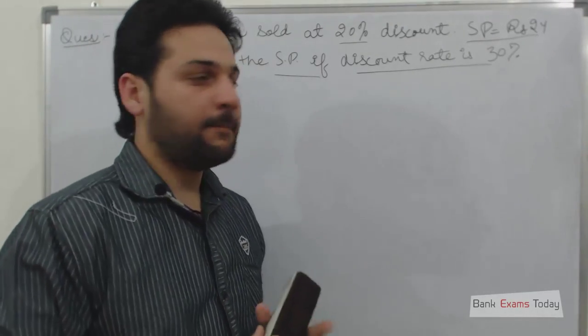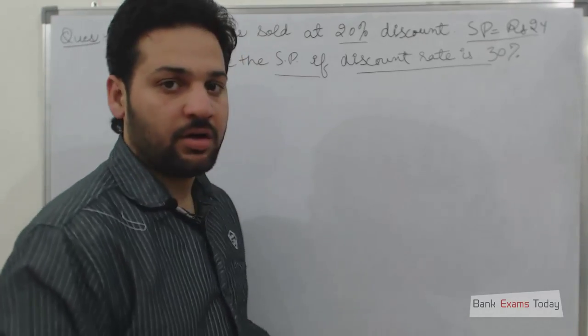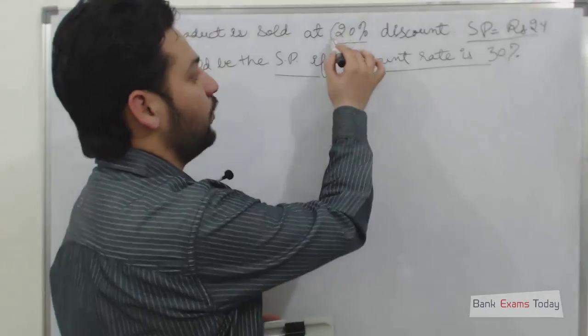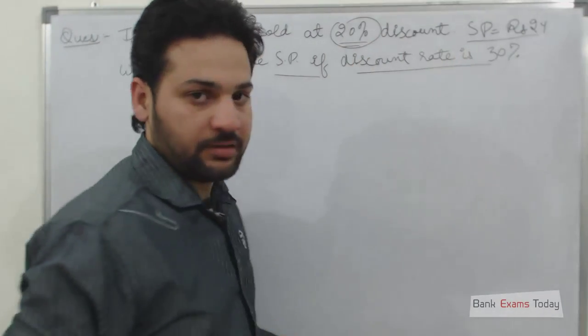First of all, let me tell you that there is a mark price, mark price or list price, on which the retailer or the wholesaler gives us a discount. So after deducting the discount rate, we get the selling price.